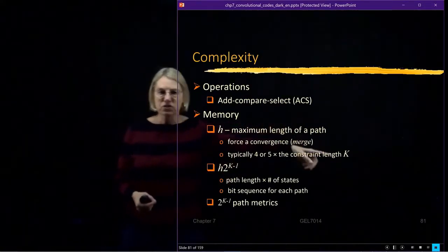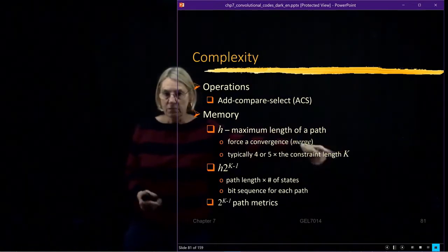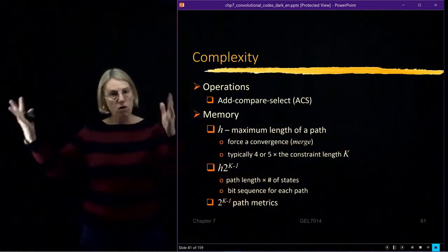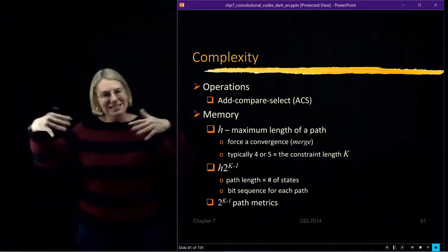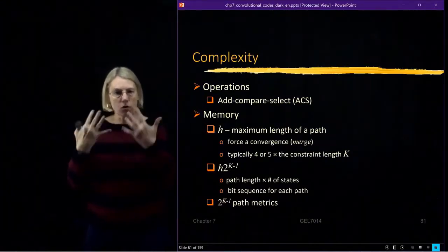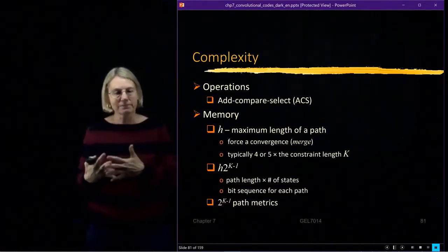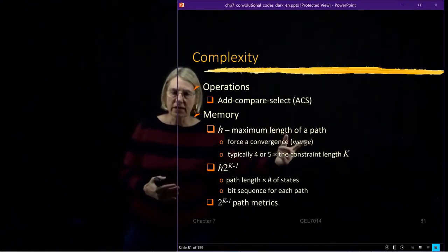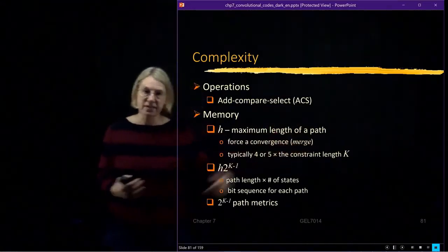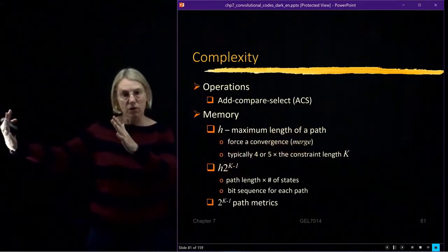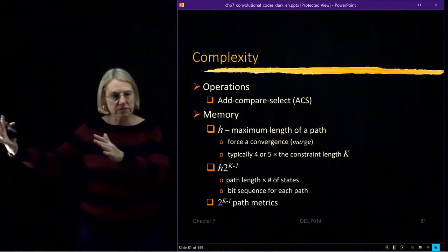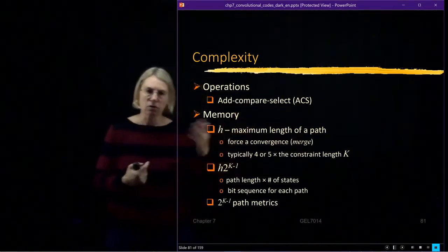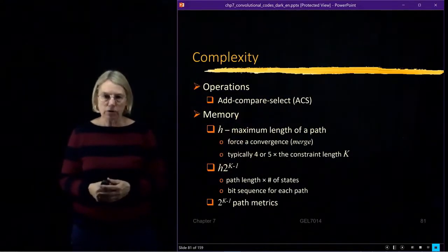The longer the constraint length, the more powerful the code — you have more redundancy and more interconnectivity that gives more structure to your redundancy. But of course it also increases complexity: the complexity of the encoder because you have more registers, which is a minor increase. However, it's a big increase in memory in the decoder as well.